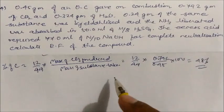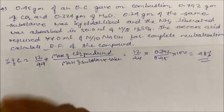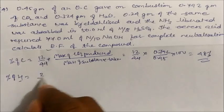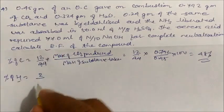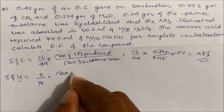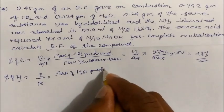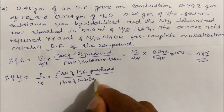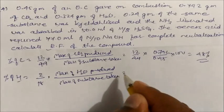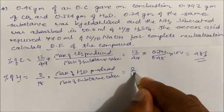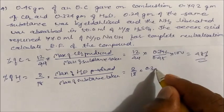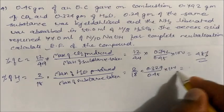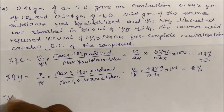Percentage of carbon = (12/44) × mass of CO₂ produced ÷ mass of substance taken × 100 = (12/44) × 0.792 ÷ 0.45 × 100 = 48%. Percentage of hydrogen = (2/18) × mass of water produced ÷ mass of substance taken × 100 = (2/18) × 0.324 ÷ 0.45 × 100 = 8%.